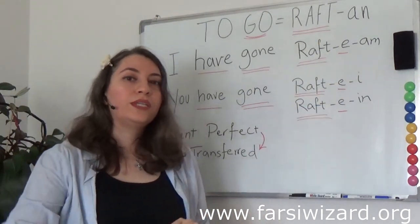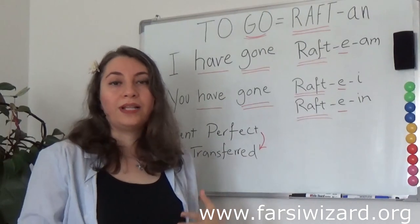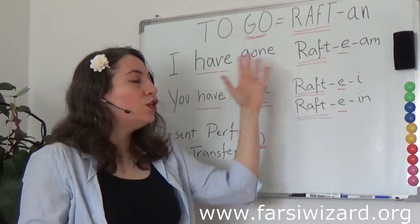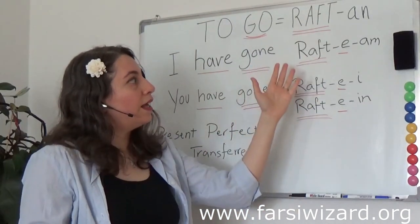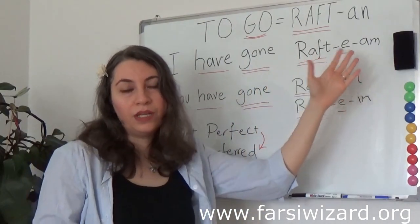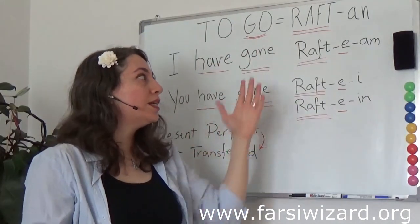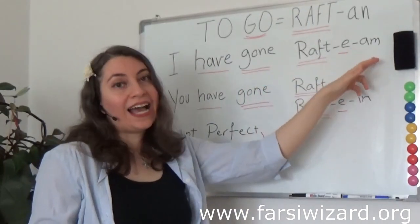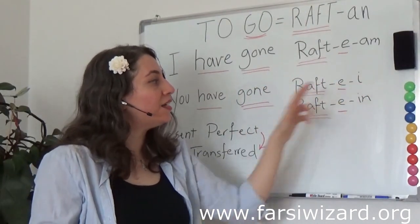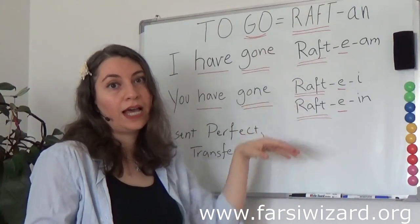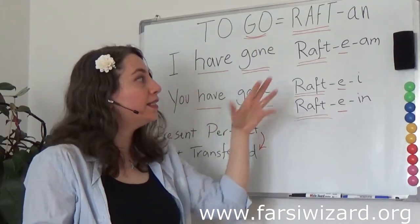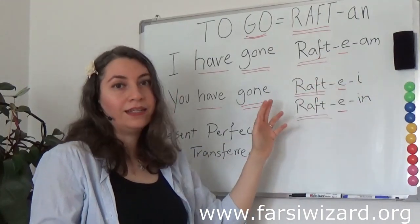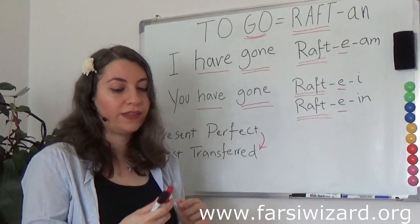Just a quick note: when you listen to people actually speaking or if you're watching movies in Farsi, you may not really hear something like RAF-TE-AM. What you will actually hear is RAF-TAM. So RAF-TE-AM, RAF-TE-E, or RAF-TE-IN — on paper this is how it should be, but in reality you will hear RAF-TAM, RAF-TE, RAF-TEIN. Just be mindful of that.